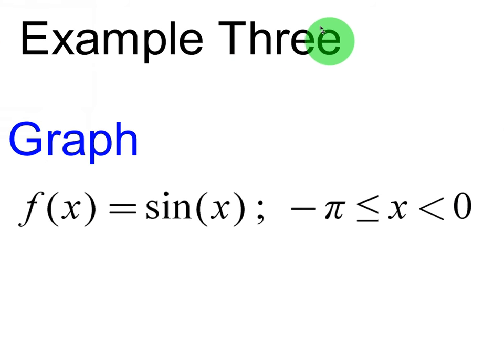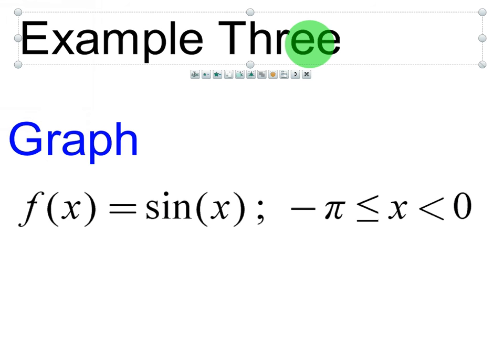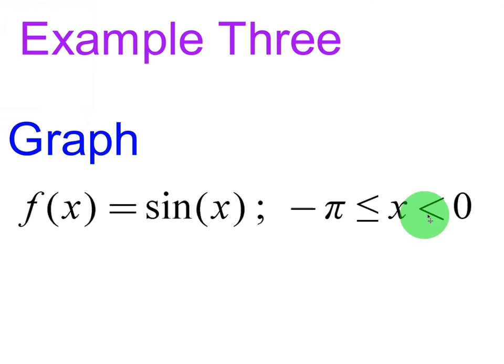We've practiced reading these so much now that I think you should be good to go. So it says graph f(x) = sin(x). Here is our function to the left of the semicolon. Semicolon means whenever, right? So sine of x whenever, here is our interval. So how do we read this inequality? It'd be negative pi is less than or equal to x is less than 0. So whenever x is between these two numbers, we're going to have this graph. If x is not between negative pi and 0, there will be no graph.